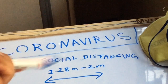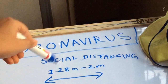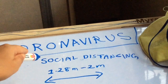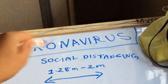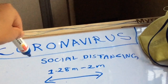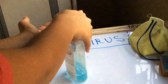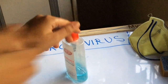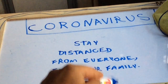What is social distancing? It is basically staying away from people — maintaining a distance of either 1.28 meters or 2 meters. Please follow the concept of social distancing so that you do not get the coronavirus. Use an alcohol-based sanitizer to sanitize your hands, and stay distanced from everyone — even your own family.